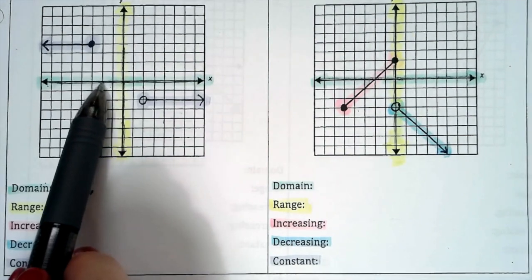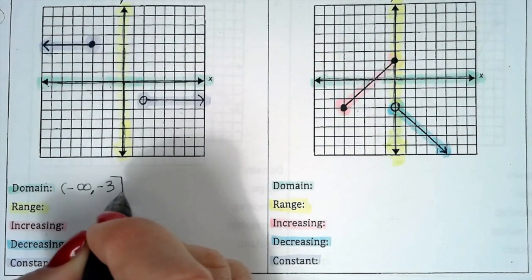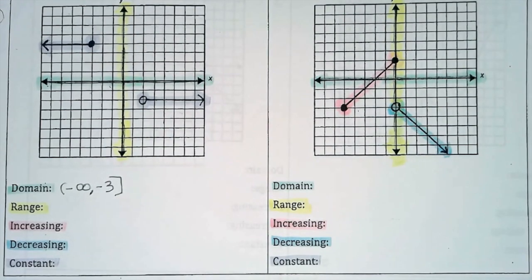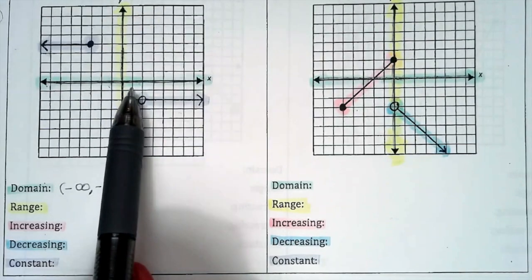Your domain refers to the x values, which is negative 1, 2, 3. So negative 3, it's colored in, so it's included, so we use a square bracket. Then there's a gap in the x values. That gap could be teeny tiny, it could be one point, it could be many points.